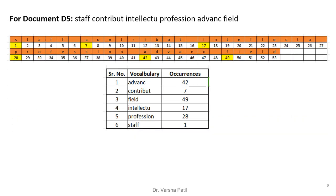For document D5, we follow the same procedure carried out for D1 to D4, finding out the vocabulary and their occurrences at the particular locations.